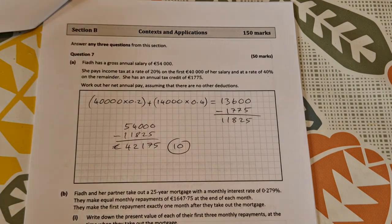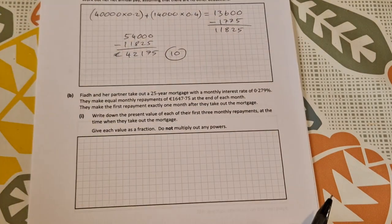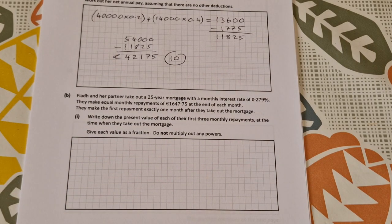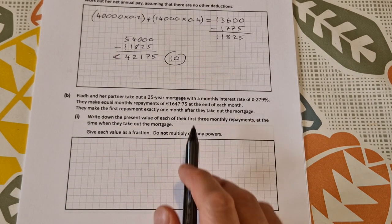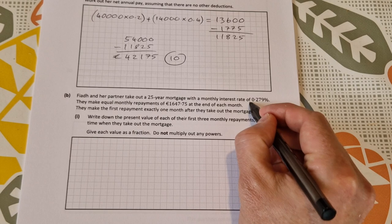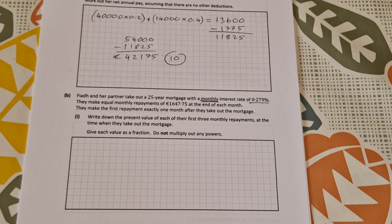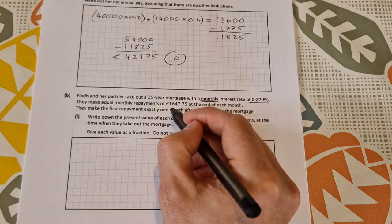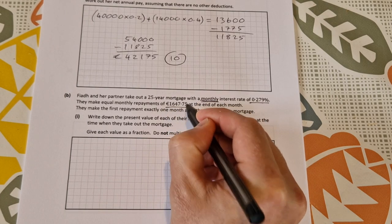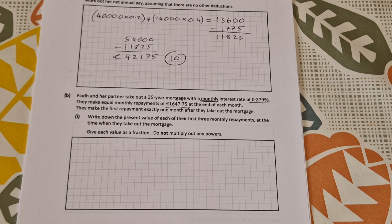So that's a nice easy start to that question, you're getting 10 out of 50 for doing that. Part B: Fia and her partner take out a 25 year mortgage with a monthly interest rate - monthly very important - of 0.279 percent. They make equal monthly repayments of 1,674 euro 75 cent at the end of each month. They make the first repayment exactly one month after they take out the mortgage.